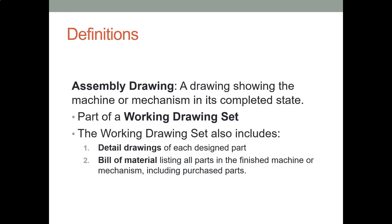An assembly drawing is essentially a part of a working drawing set. A working drawing set is a set of drawings used to describe every part and the assembly of those parts to make a machine or mechanism. The description of those parts are called the detail drawings, and the assembly drawing is the description of the assembly of those parts to form the machine or mechanism. The detail drawings are intended to be used for manufacturing those parts, while the assembly drawing is not for manufacturing — we assemble it. So an assembly drawing can lean towards an assembly practice; that's why you see some exploded assembly drawings.